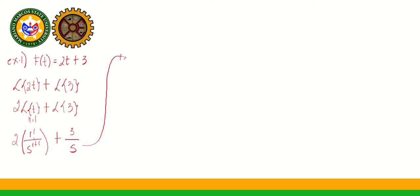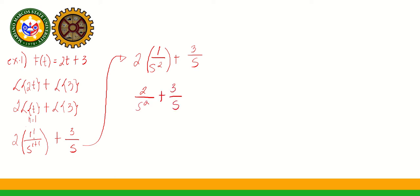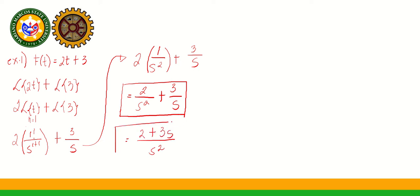Simplifying further: 2 times 1 factorial over S² is 2 times 1 over S², giving 2 over S². Combined with 3 over S, we have 2/S² + 3/S as our answer. If you want to simplify further by taking the LCD of S², this becomes (2 + 3S) over S². That is the linear property of Laplace transformation.